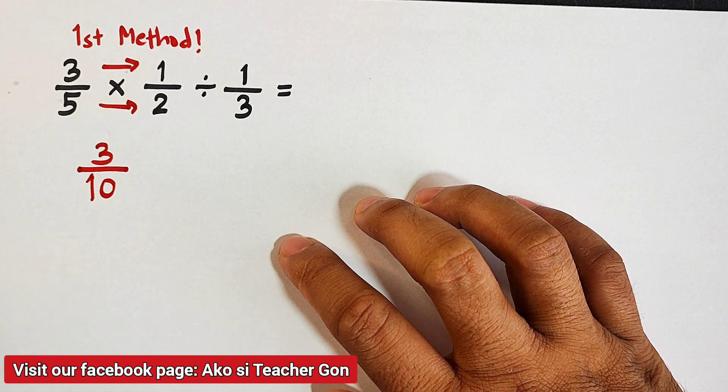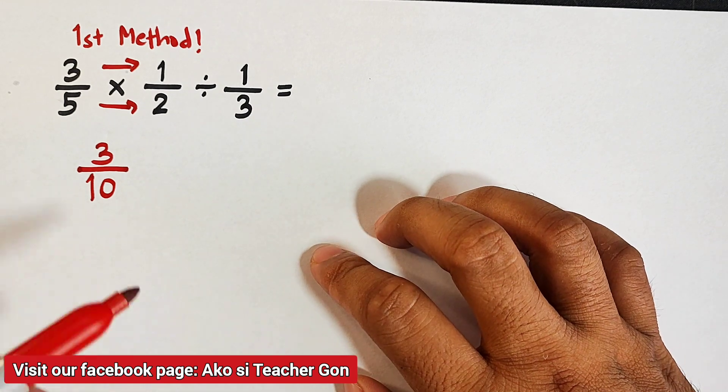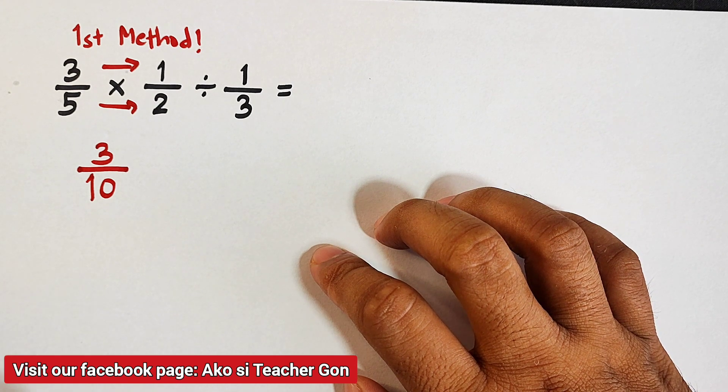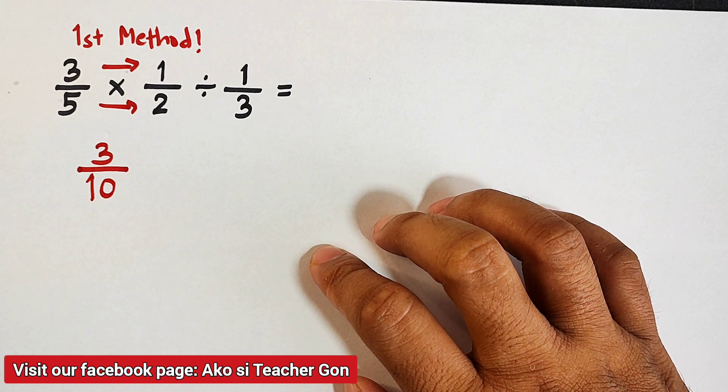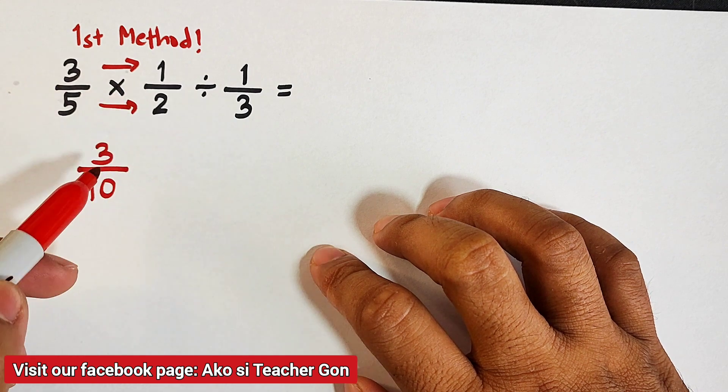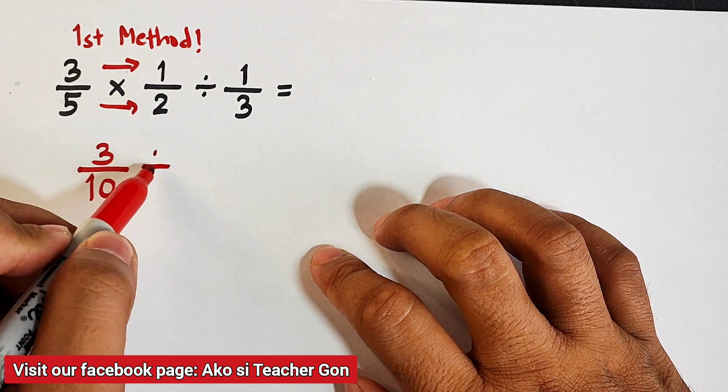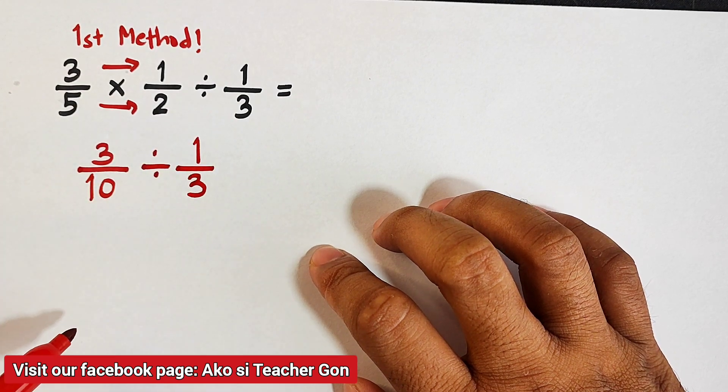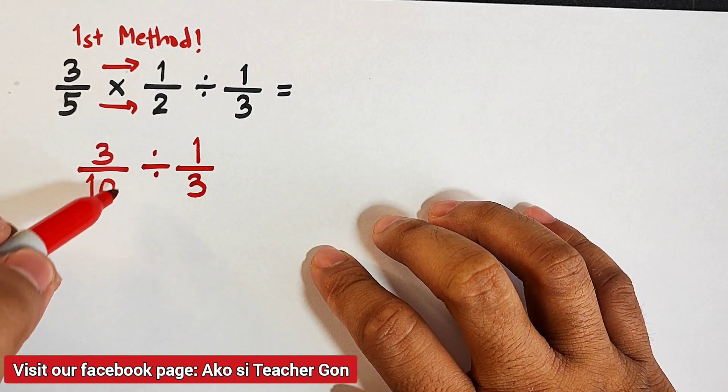And again, if you're new in multiplying fractions, all you need to do is to multiply the numerators and multiply also the denominators. After multiplying these two fractions, we will divide it by one-third. So how do we divide fractions? First, we will copy.